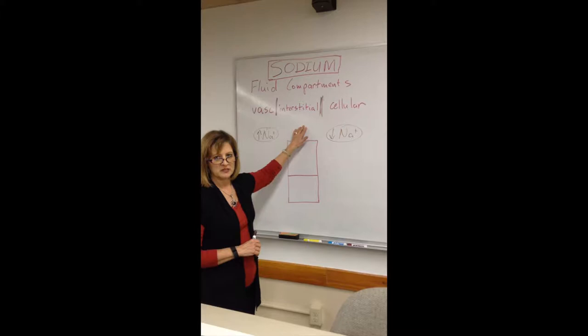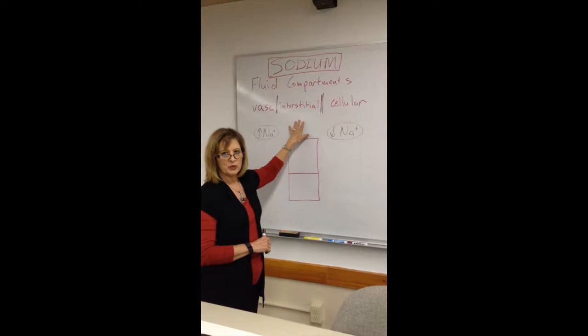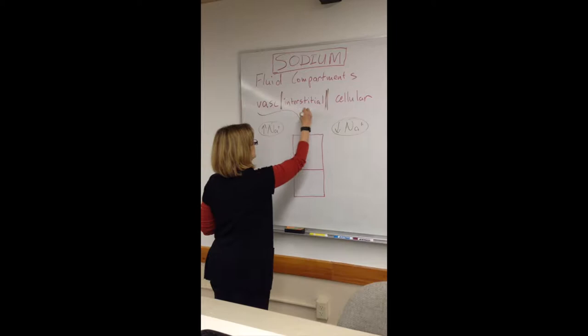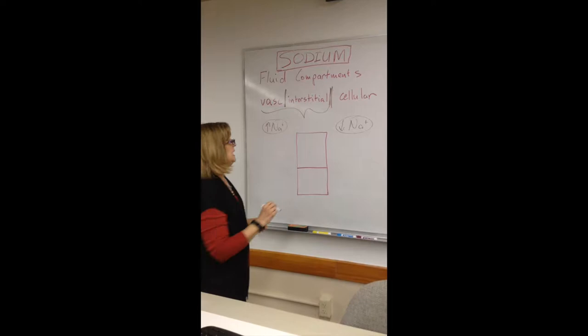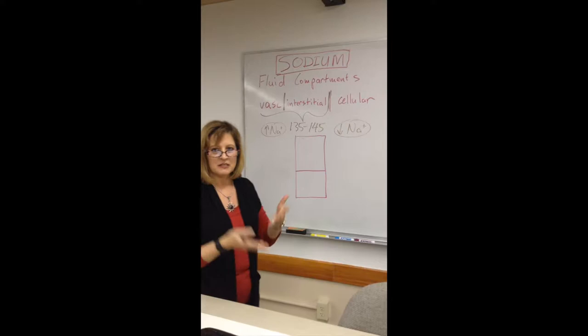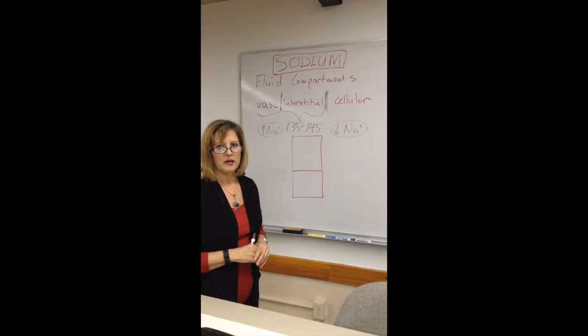Sodium is the big electrolyte to think about when we consider our fluid compartments. The three fluid compartments in our body are vascular, interstitial, and cellular. The majority of sodium is found in the vascular and interstitial compartments. Our serum levels show that normal sodium should be from 135 to 145, which is the largest range compared to all other electrolytes, because sodium is the extracellular electrolyte with the highest concentration.